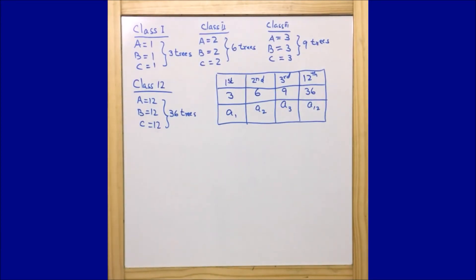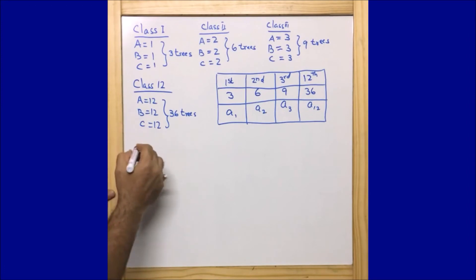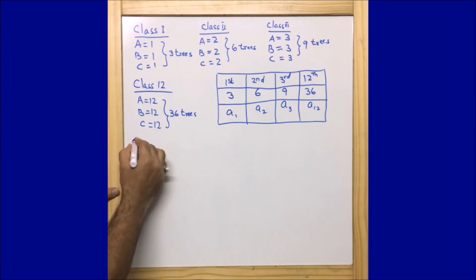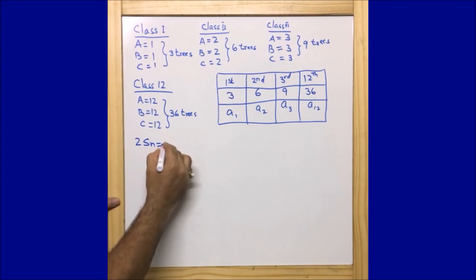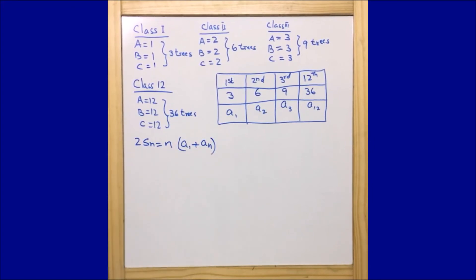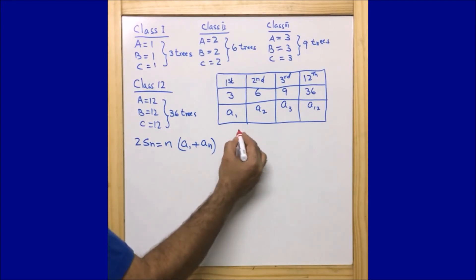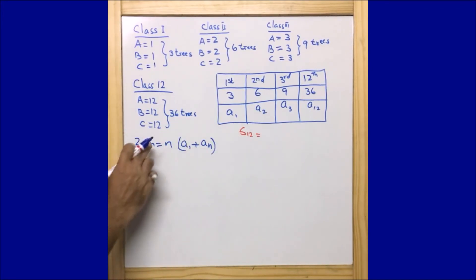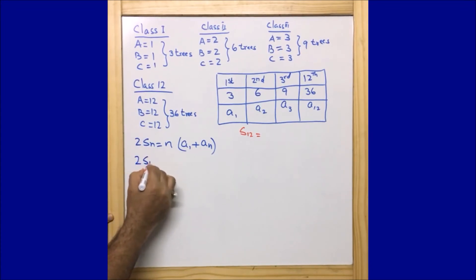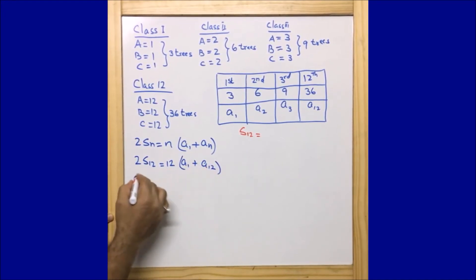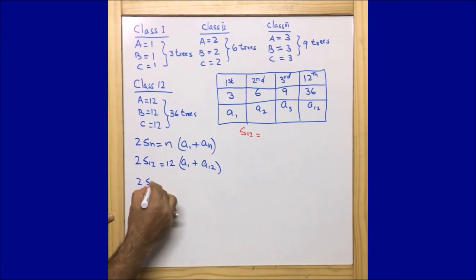Our main goal is to find S12. Let us first write down the formula for the summation of n terms: S_n = n/2 × (a1 + a_n). We are going to find S12, the total number of trees. Replacing n with 12: S12 = 12/2 × (a1 + a12).